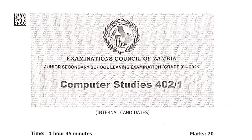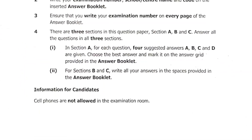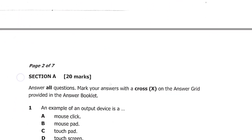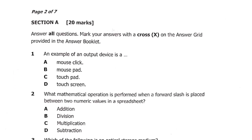Good morning, good afternoon, and good evening — whenever and wherever you're watching this video from. It's that time of the year when we start revising for the final exams. We're going to look at Section A of a computer studies general past paper. Section A is 20 marks — answer all questions and mark your answers with a cross on the answer grid provided in the answer booklet.